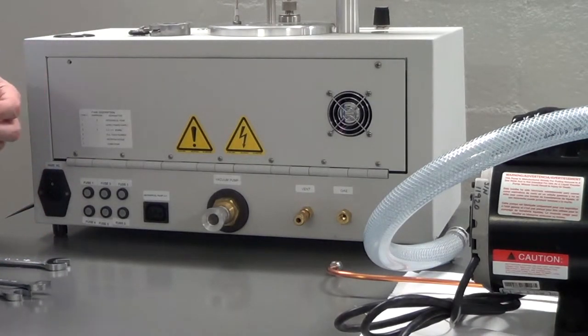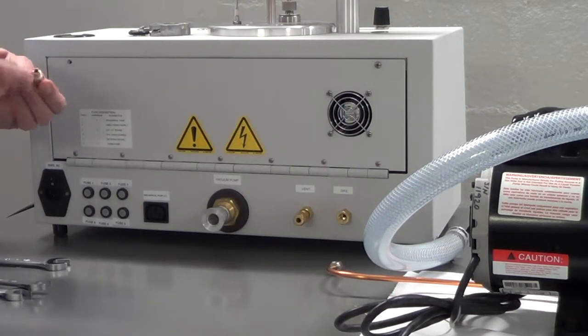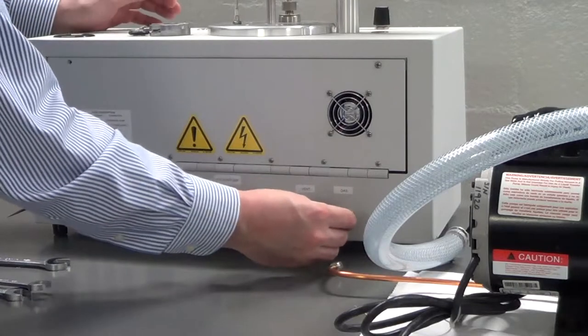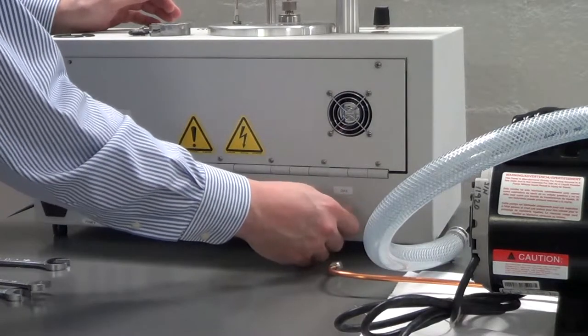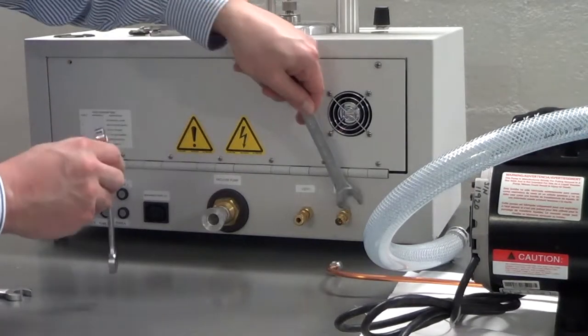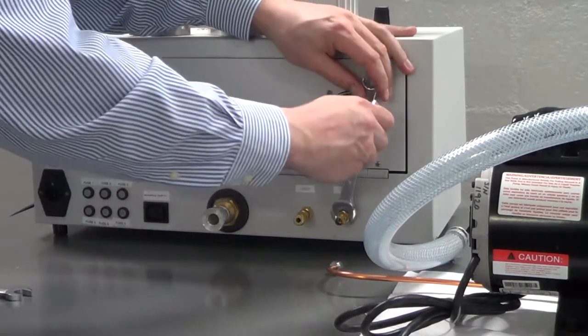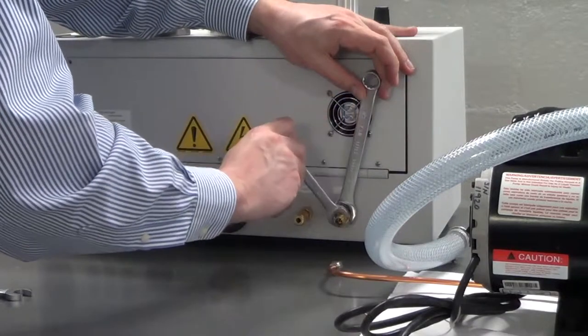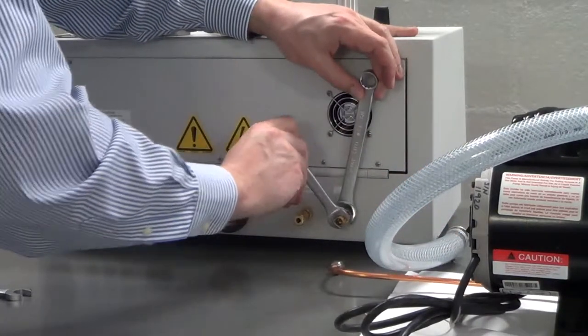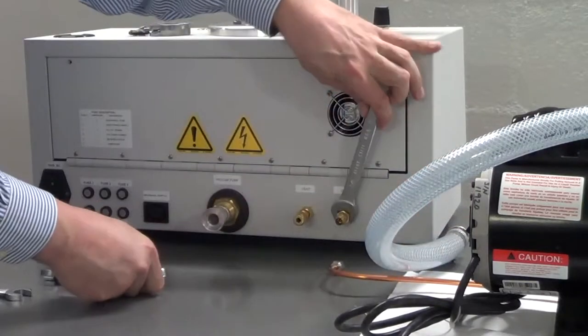Start by connecting the process gas line, typically argon. You'll want to use an adapter to go from the 1 1/8 inch female NPT fitting coming out of the back of the system to whatever type of connector you're using for your gas line. In our case here, we have a 1/4 inch Swagelok adapter, which is the preferred connector. Secure the adapter into the port labeled gas.